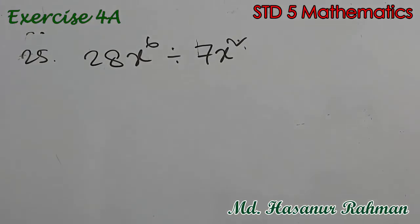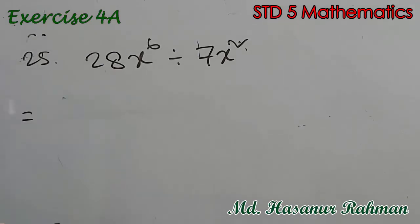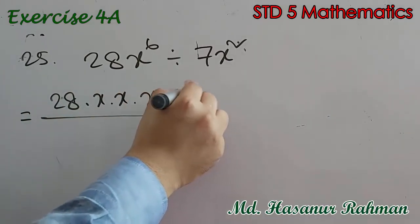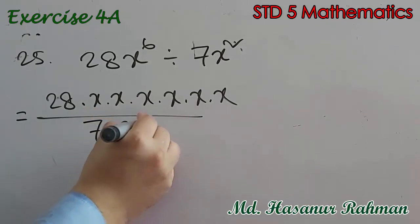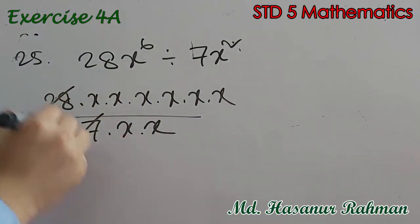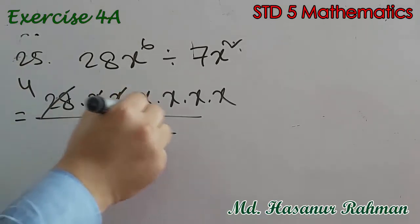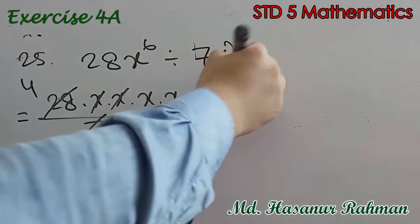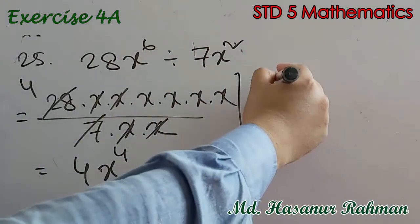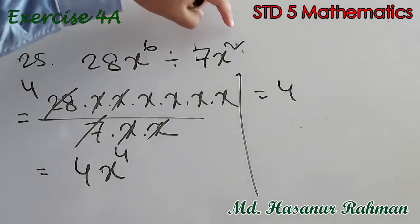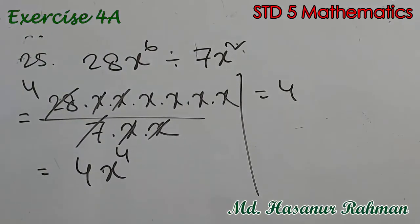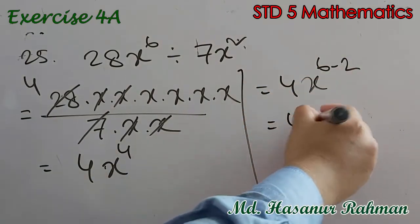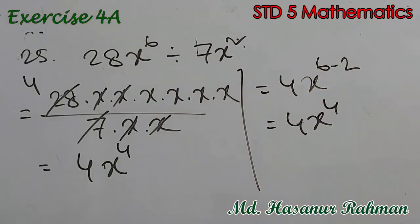Number 25 says 28x to the power 6 divided by 7x squared. Expanding: 28 into x into x into x into x into x into x, divided by 7 into x into x. 28 divided by 7 is 4, then two x's cancel, leaving x to the power 4. So the answer is 4x to the power 4. Alternatively: 28 by 7 is 4, and x to the power 6 minus 2 gives x to the power 4, so 4x to the power 4.